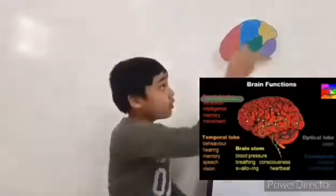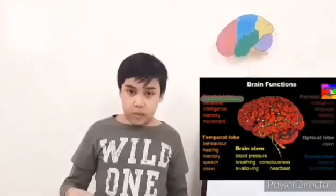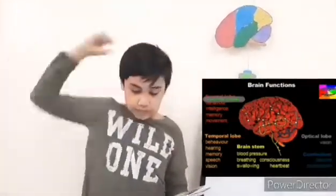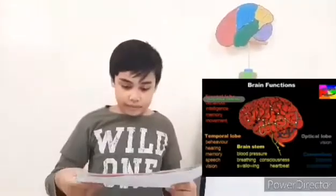The cerebellum, or little brain, is at the back side of the brain. Its functions are balance and coordination. The brain stem is connected to the spinal cord. Its functions include blood pressure, breathing, heartbeat, and swallowing.